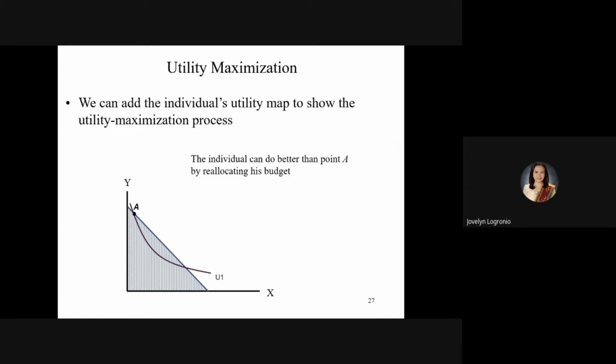The individual or consumer can do better than point A by reallocating their budget. Combining the indifference curve and the budget line, bundle A lies on both the budget line and the indifference curve, so it is affordable. However, the consumer can reallocate by changing initial spending — increasing consumption of good X — and the new point A-prime must still be within the consumer's income.